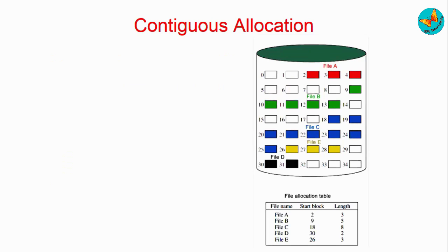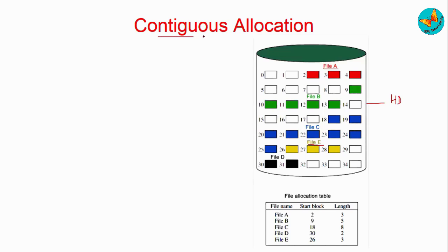Let us start with contiguous allocation. In this diagram you can see different files from file A to file E, and below the table is our hard disk. The word 'contiguous' means they will be in adjacent memory locations — in sequence. So file A starts at block 2 and has a length of 3, meaning it occupies the next three adjacent blocks: 2, 3, and 4 will be used to store file A.